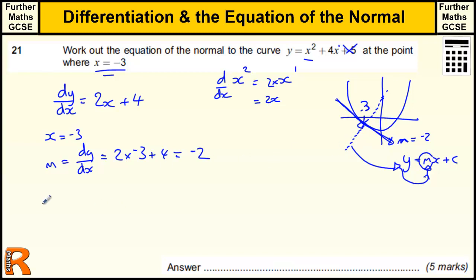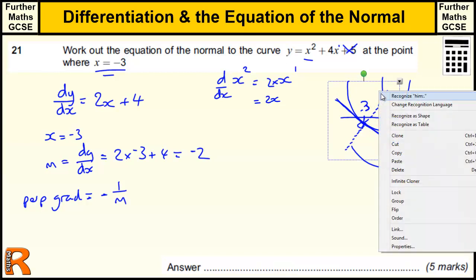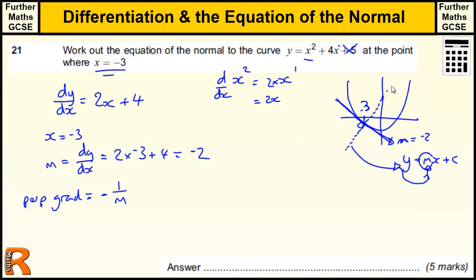we need to do that thing where we know that the perp grad equals the minus reciprocal, so that means 1 over the original gradient. So if this is our gradient m, to get the one at right angles, we need to do negative of 1 divided by that one, the negative of 1 divided by that one.